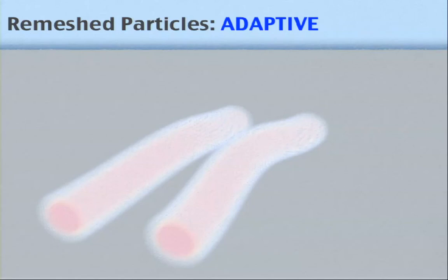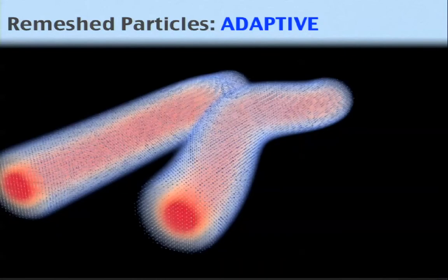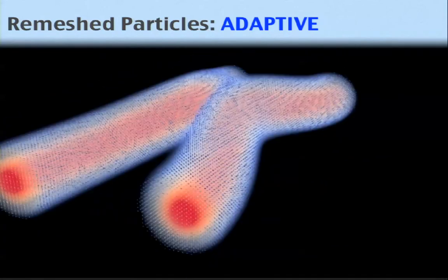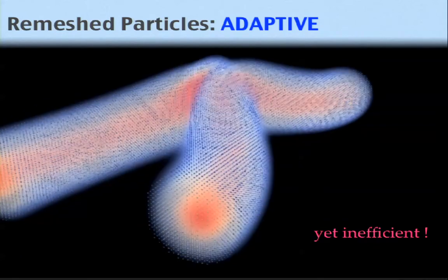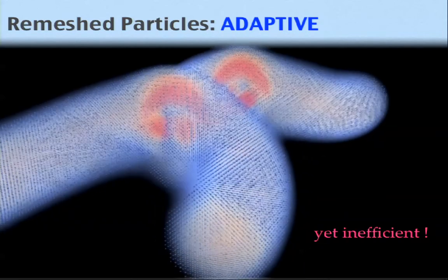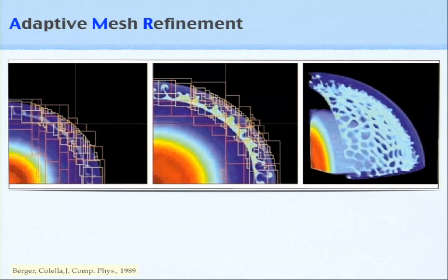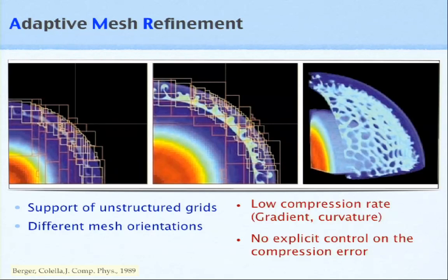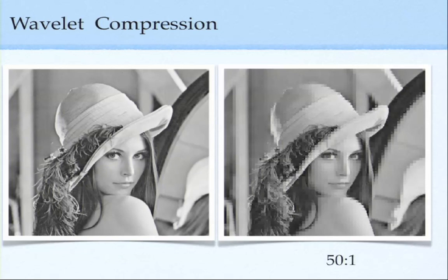Now, about particle methods and remeshing: the particles remain rather regular because of the remeshing, so the methods are adaptive by virtue of being Lagrangian, but they still have a problem — they are inefficient because in smooth and fine regions of the domain the particle spacing epsilon is the same everywhere. One thing you can do is adaptive mesh refinement at the remesh stage. We observed that AMR typically uses gradients and curvatures, but in image compression people rarely use those; instead, a very effective algorithm is wavelet compression — and that's what we decided to use to adapt the grid.